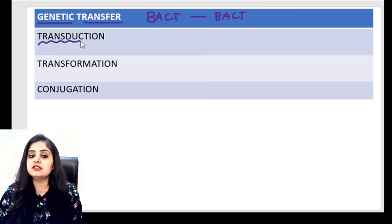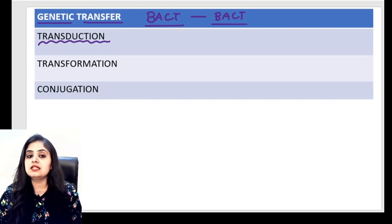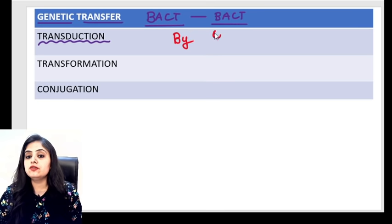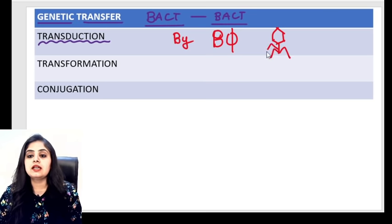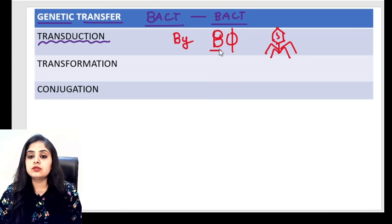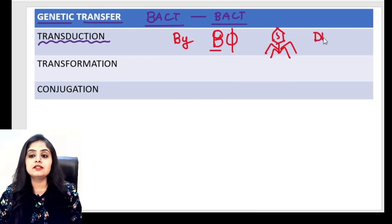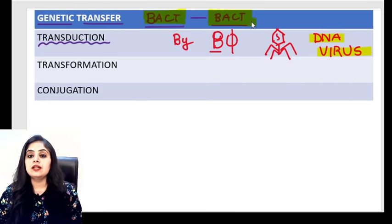The very first of these is transduction. Who transfers genetic material from one bacterium to another? It is done by the help of something known as a bacteriophage. Everyone has seen a bacteriophage, which looks something like a tadpole. What exactly is a bacteriophage? Although it has 'bacterio' in its name, a bacteriophage is primarily a DNA virus. So indirectly, it's a virus transferring material from one bacterium to another.